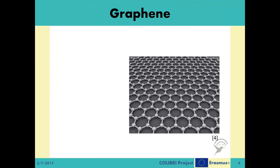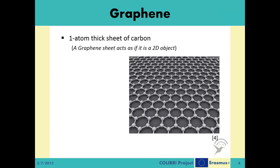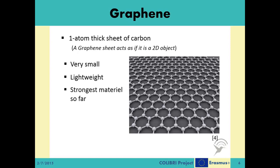Regarding terahertz waves, the major problem becomes: how are we going to generate signals in this frequency range efficiently? Enter graphene — a one-atom thick sheet of carbon. It is a very new material, first produced in lab environments in 2003, which has unique properties. Unlike any other material, graphene sheets act like two-dimensional objects. They are very small in size and suitable for very high levels of miniaturization. They are very lightweight, yet one of the strongest materials known so far, and they have very high heat and electricity conductivity.